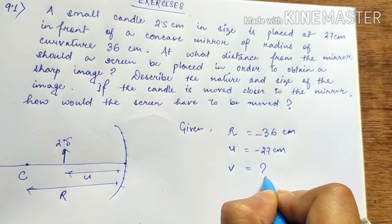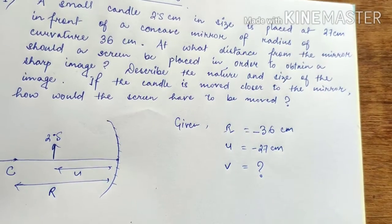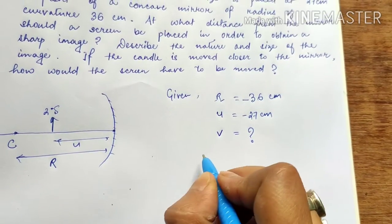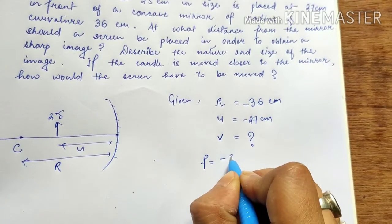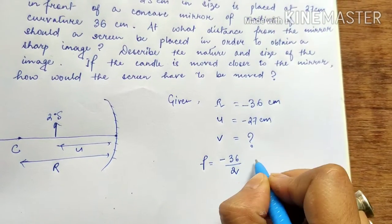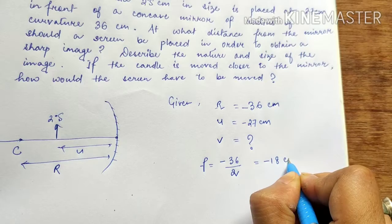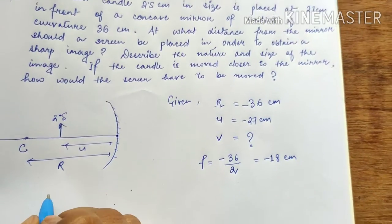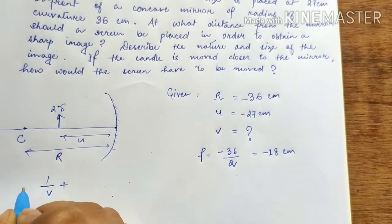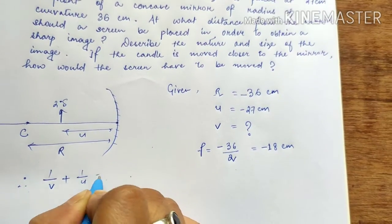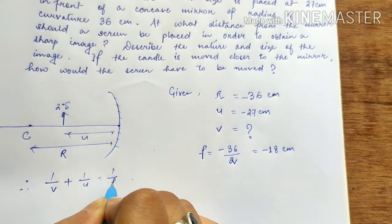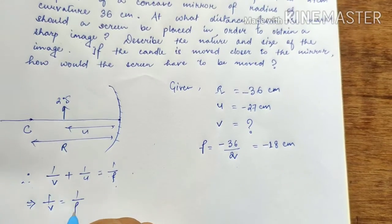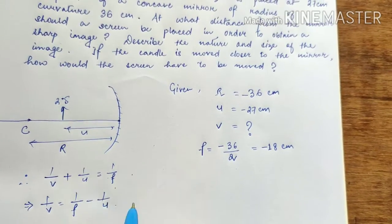We need to find the nature of the image. We have a focal length, and we will use the mirror equation: 1/V = 1/F minus 1/U.